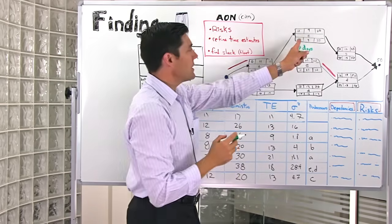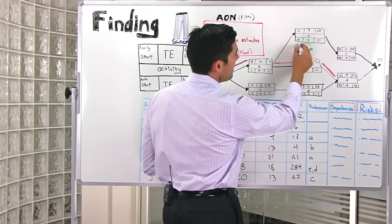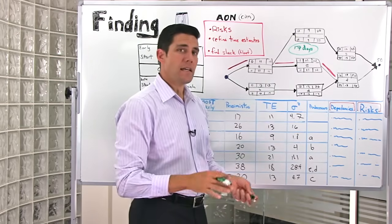Quite simply, 28 days minus 11 days gives me 17 days. So what that tells me is across this path, I've got 17 days of slack.